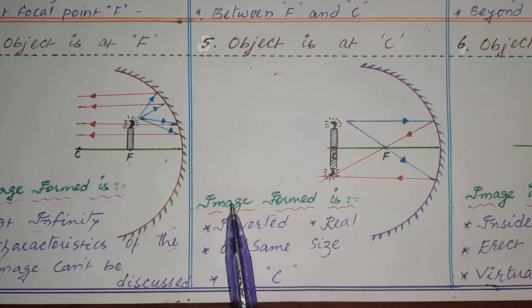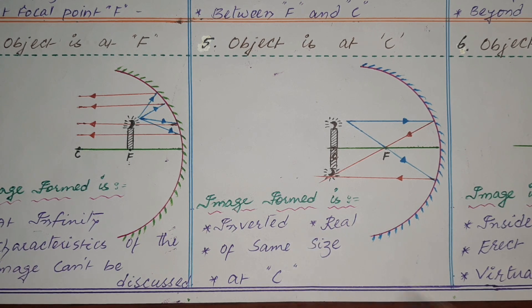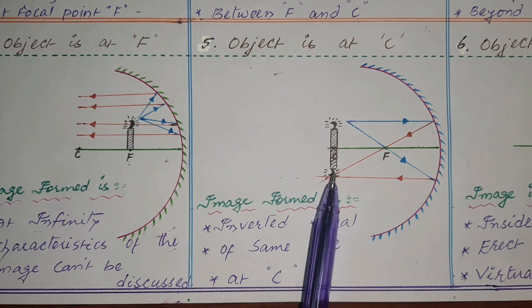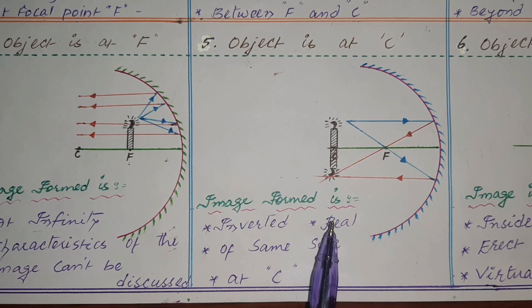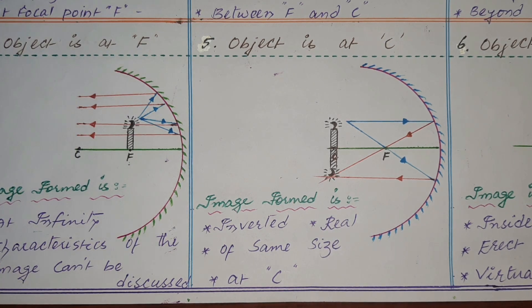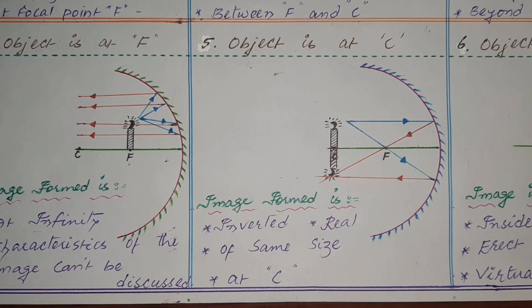The characteristics of the image formed when the object is at C: it is inverted and real — as seen in the diagram, it is inverted and can be stored on a screen. It is of the same size as the object, and it is formed at the center of curvature C.